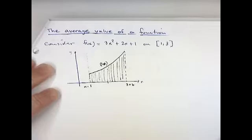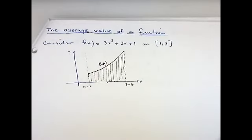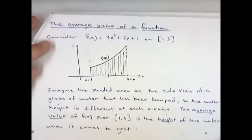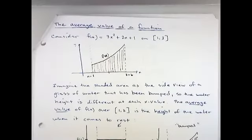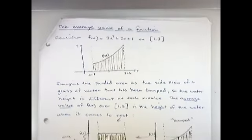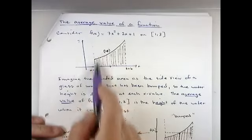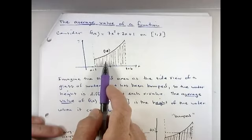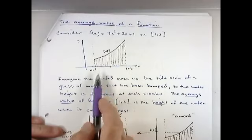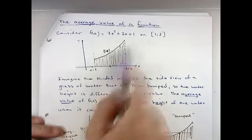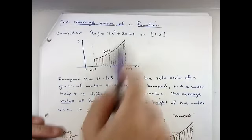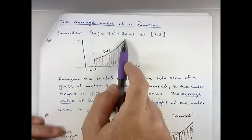One way to think about the average value is to think of this picture as the side view of a glass of water. I kind of extended this up a little bit. Imagine this was a glass of water that somebody just bumped. So the water is sloshing over to one side here in this cup. But let's pretend it doesn't go over the edge.